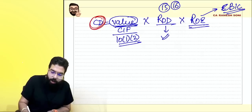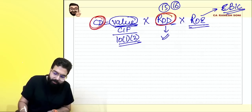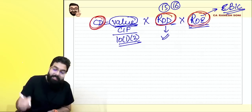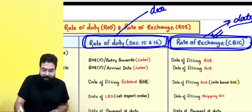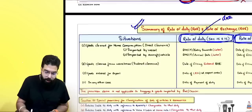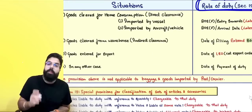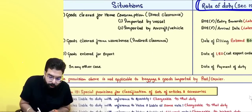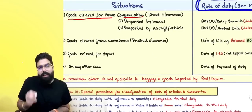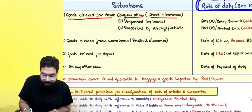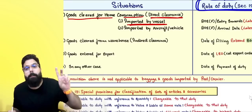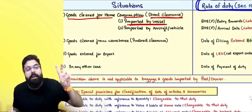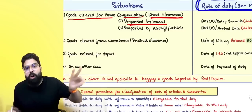The next topic is rate of duty. Section 14's proviso tells you about rate of exchange. Section 15 and 16 talk about the rate of duty — which date's rate of duty and rate of exchange shall apply. Custom duty equals value multiplied by rate of duty multiplied by rate of exchange. Section 15 addresses import valuation; Section 16 addresses export. Always take the CBIC notified rate of exchange — ignore SBI/RBI rates in the exam.